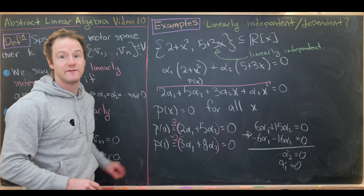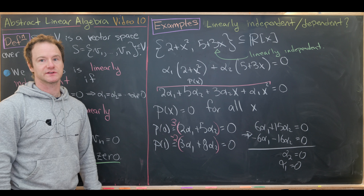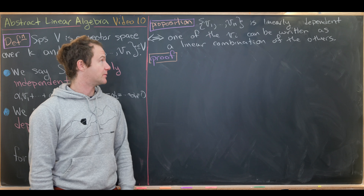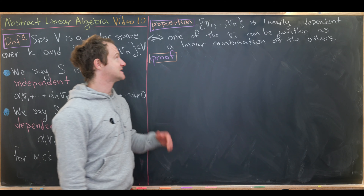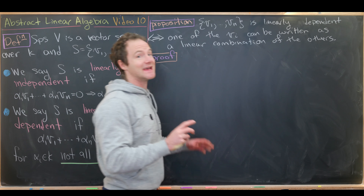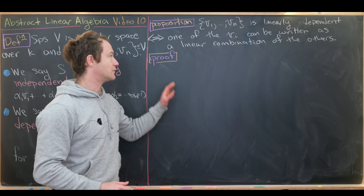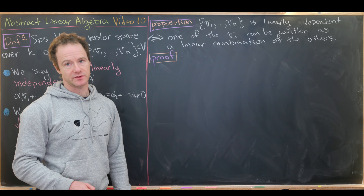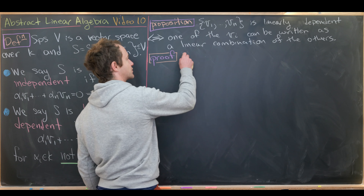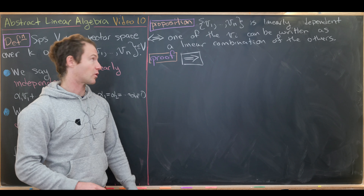Now let's look at a standard classification result involving linear independence and dependence. It says: the collection v_1, ..., v_n is linearly dependent if and only if one of the v_i can be written as a linear combination of the others. This is an if-and-only-if statement, so we have two directions to prove.